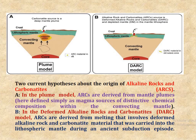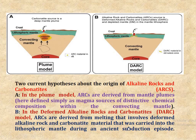There are two current hypotheses about the origin of alkaline rocks and carbonatite. The first is the plume model, in which alkaline rocks are derived from mantle plumes — defined as magma sources of distinctive chemical composition within the convective mantle. The second is the deformed alkaline rocks and carbonatite bags model, in which these rocks are derived from melting involving deformed alkaline rock and carbonatite material carried into the lithospheric mantle during ancient subduction episodes.